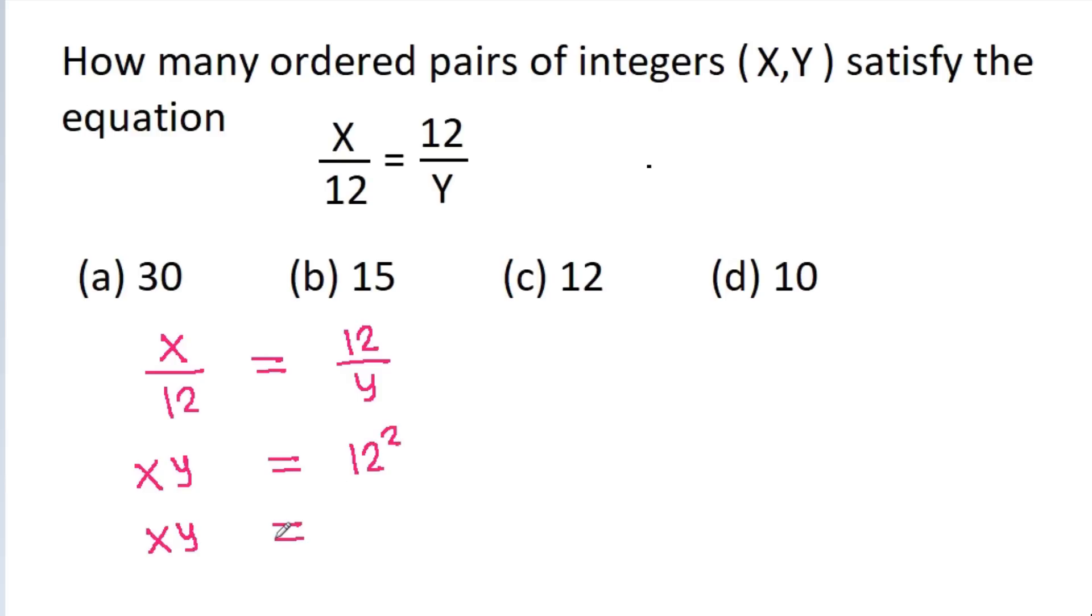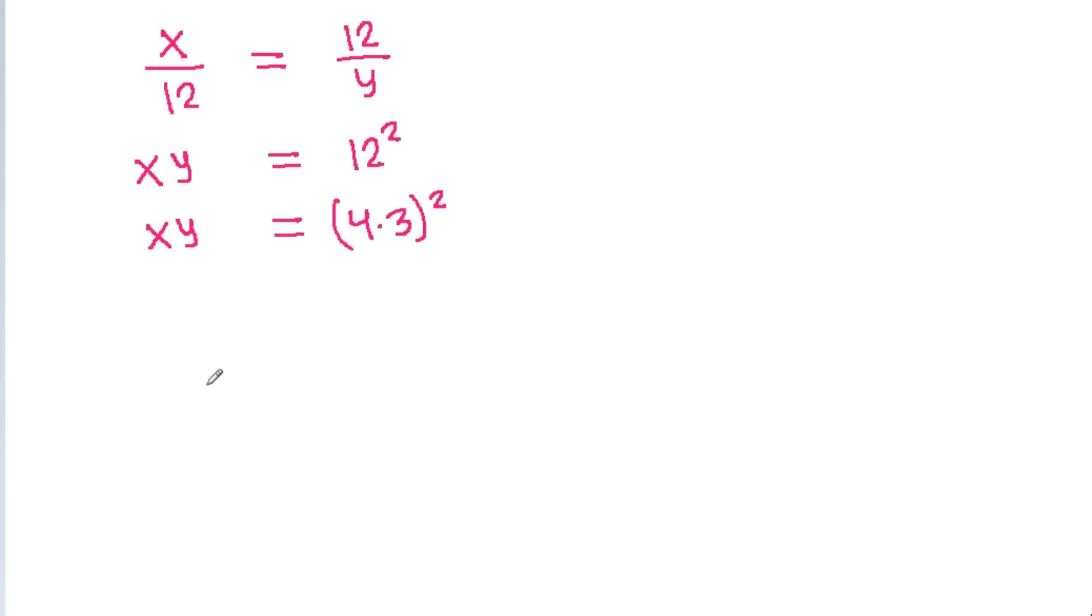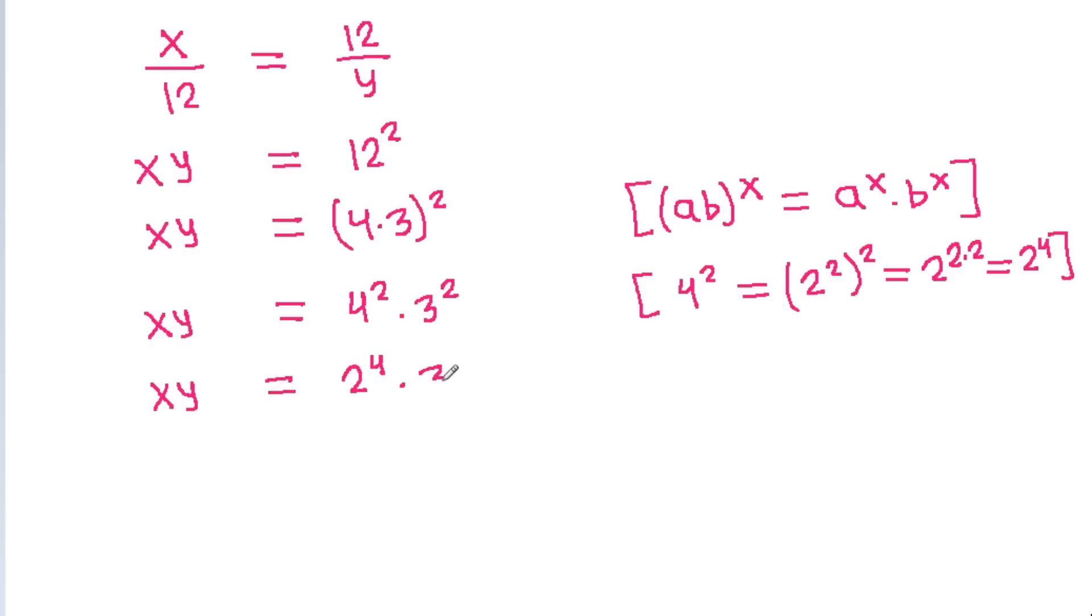Now xy = 12² = (4×3)². Using the property (ab)^x = a^x × b^x, this equals 4² × 3². Since 4² = (2²)² = 2^4, we have xy = 2^4 × 3².